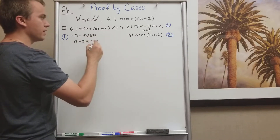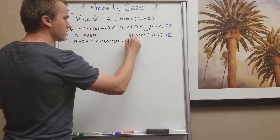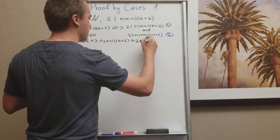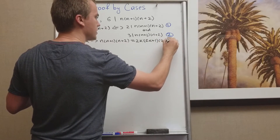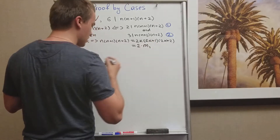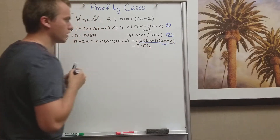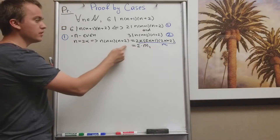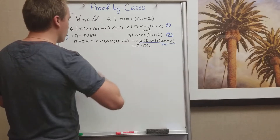If n is even, it means I can write n as 2k for some integer k. I will replace n by 2k and get 2k times 2k plus 1 times 2k plus 2. Then I can factor out a 2 and write this as 2 times m1, where m1 is the whole remaining term and m1 is an integer. So n times n plus 1 times n plus 2 has a factor of 2, meaning it's divisible by 2. So for this case, check.